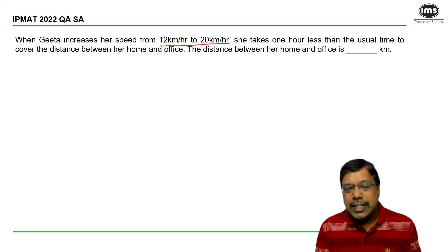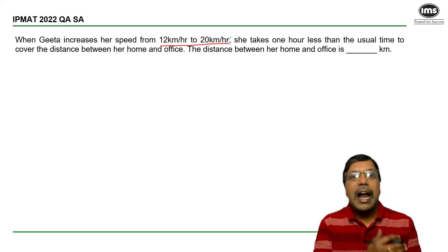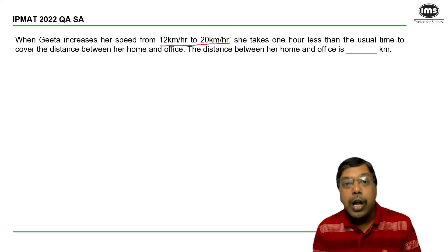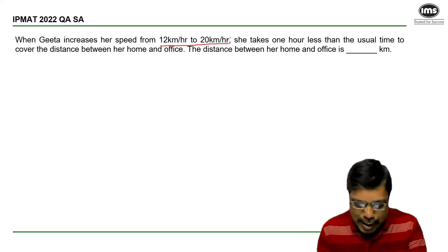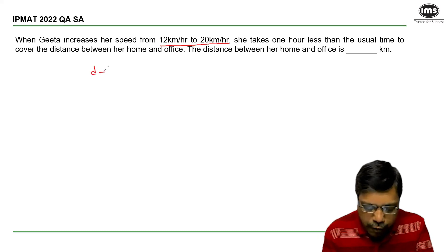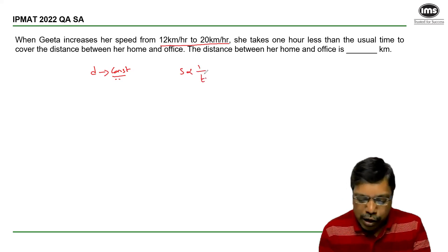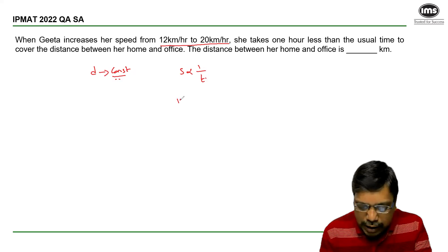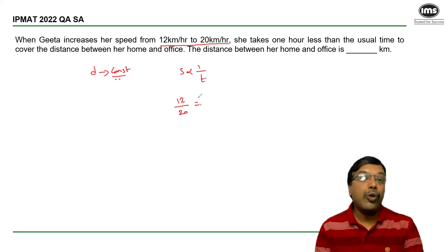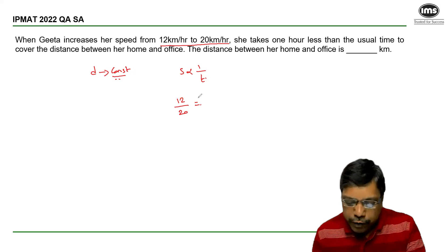As you notice, there is a change in the speed and accordingly the time, but not the distance. And we know when distance is constant, speed is inversely proportional to time. So the ratio of speeds will be equal to inverse ratio of the time taken.